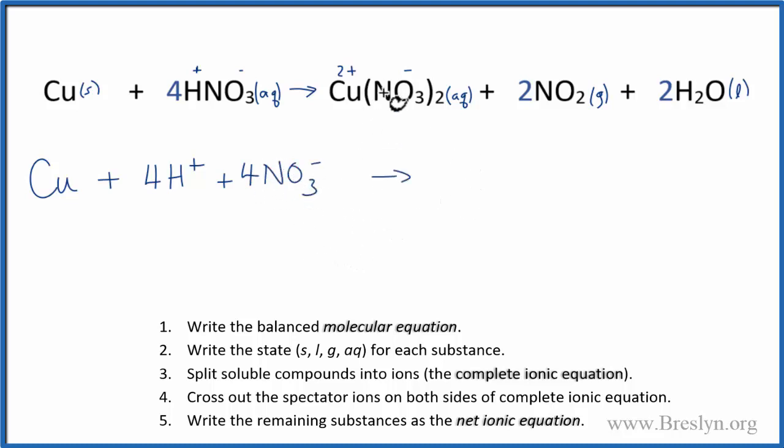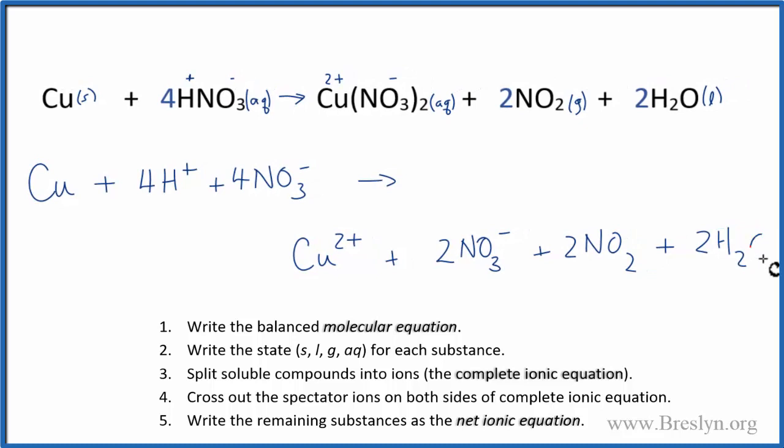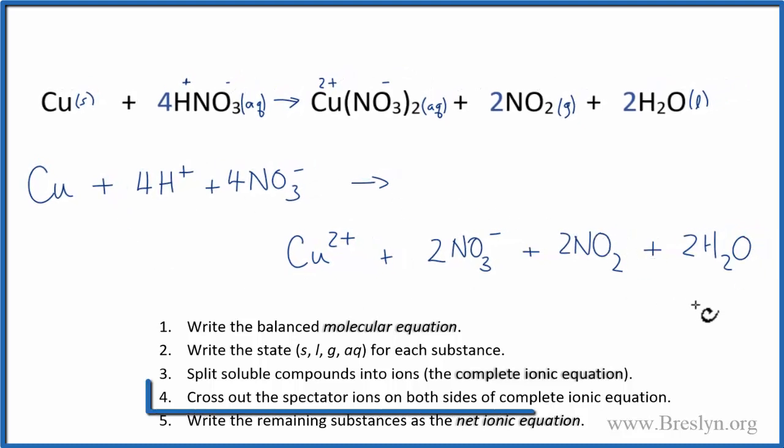And then on the product side, we have our copper 2 plus, plus 2 nitrate ions, plus the 2 NO2, plus 2 H2Os. So this is our total ionic equation.